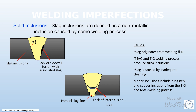Improper handling, such as using contaminated tools or equipment, can also introduce solid inclusions. These solid inclusions can have adverse effects on the properties and performance of the material, leading to structural weaknesses, reduced durability, or functional failures. Therefore, it is crucial to identify and address the causes of solid inclusion to ensure the quality and integrity of the material.